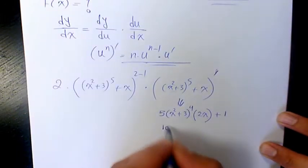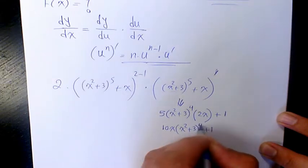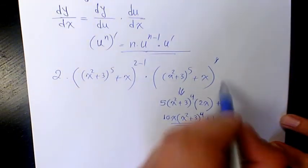So that's going to be 10x times (x² + 3)⁴ plus 1. So that's the derivative of this part.